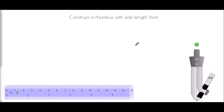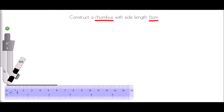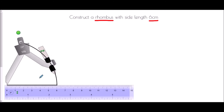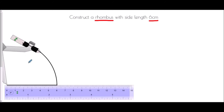Our last question is to construct a rhombus with side length 6 centimeters. The important feature here is that we understand what a rhombus is — a rhombus is a four-sided shape where all of the lengths are the same, so they're all going to be 6 centimeters. We can think about constructing a rhombus in the same way as a triangle. We start with a 6 centimeter side, bring in the compass, place it at zero, open it out to 6 centimeters, and draw an arc — finding points which are 6 centimeters away from the end of the line.